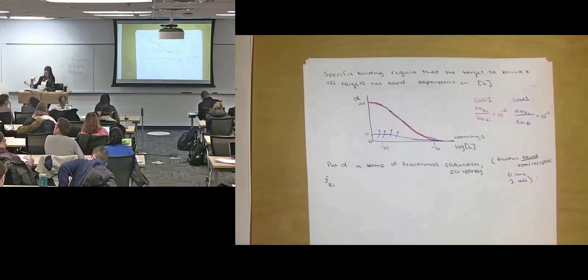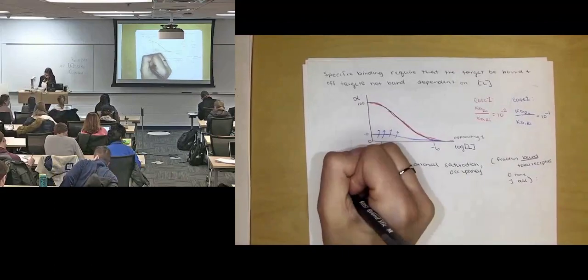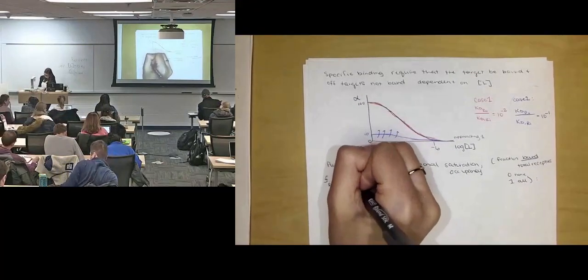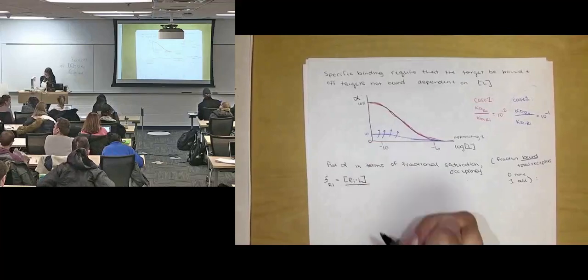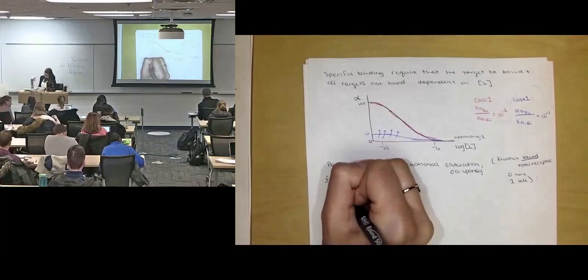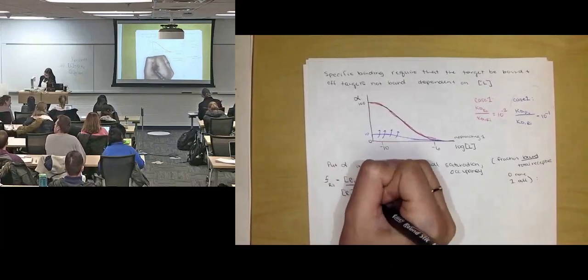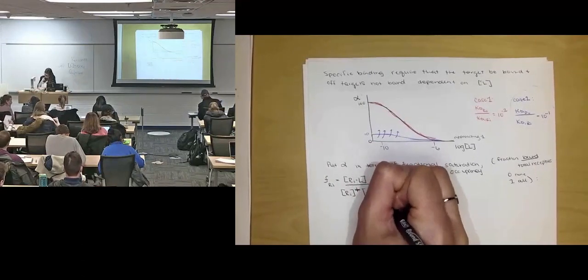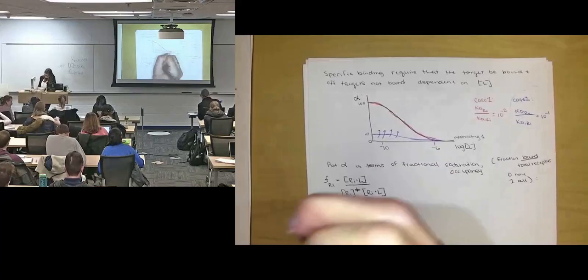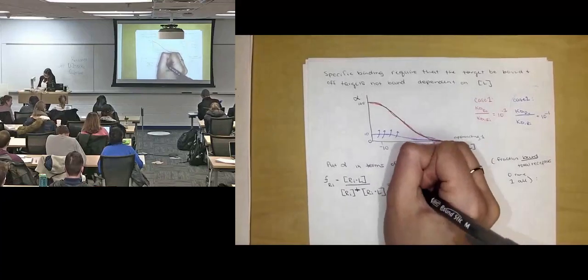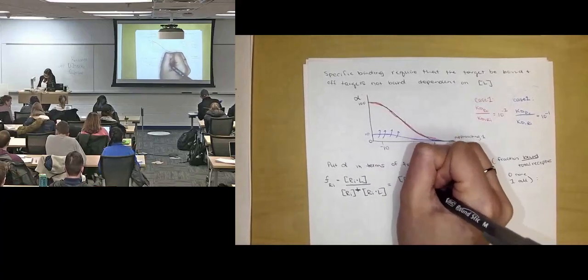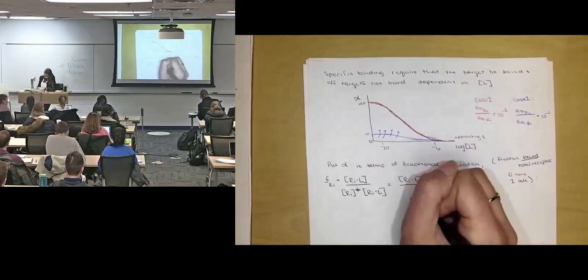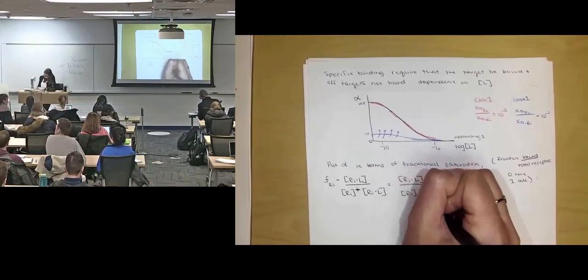So fraction of RI of our off-target is going to be equal to the concentration that is bound to the ligand over the total concentration, which is free plus bound. And this is also equal to RI over RI total.